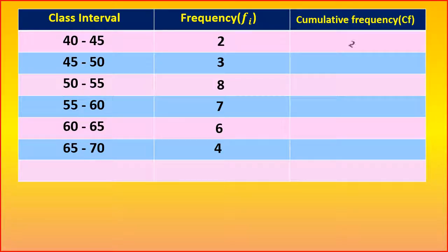First 2, and 2 plus 3 is equal to 5. And 5 plus 8 is equal to 13. 13 plus 7 is equal to 20. In the similar way, 20 plus 6 is equal to 26.